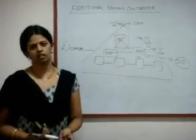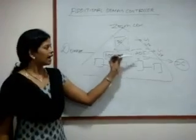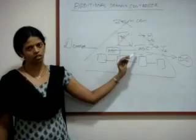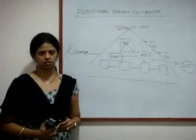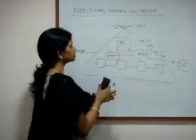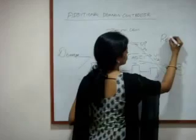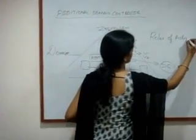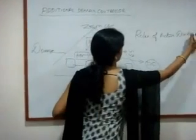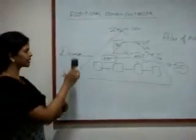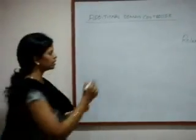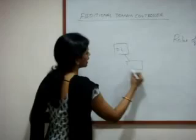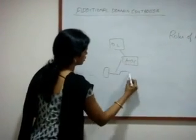But why should I not depend upon the additional domain controller permanently? If the DC goes down I can depend upon the ADC, but that should not be the permanent solution. This is because there are certain things which are active only in the domain controller — and those are nothing but the roles of Active Directory. We say that DC and ADC have the same information. Then why are the roles available only in the domain controller? The roles are available in both, but they are active only in the domain controller.